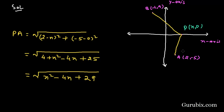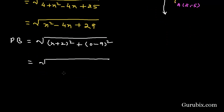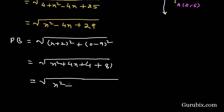Now we shall find the distance between points P and B. PB equals the square root of (-2 - x)² + (0 - 9)², which equals the square root of (x² + 4x + 4 + 81), giving us PB = √(x² + 4x + 85).